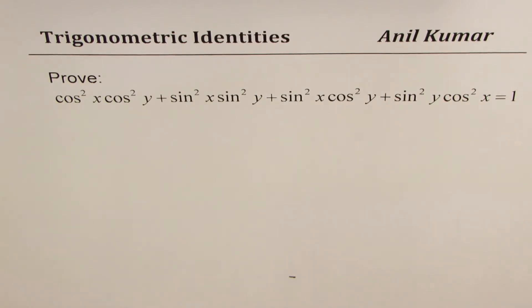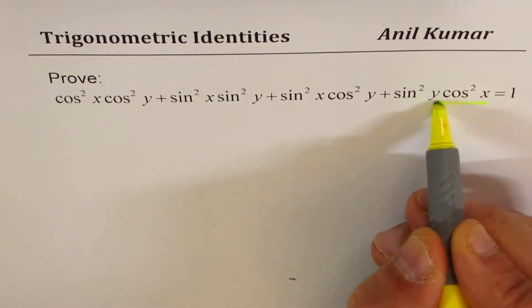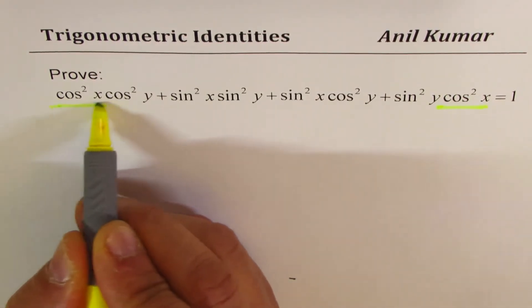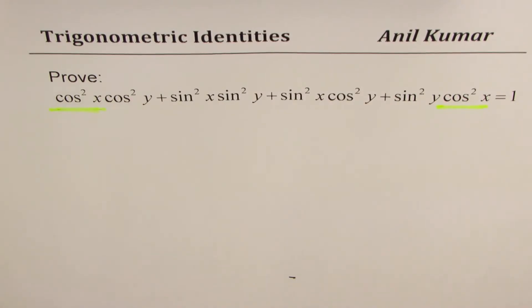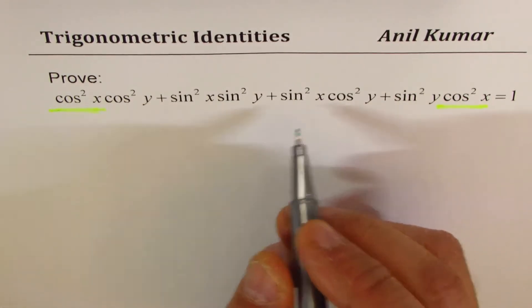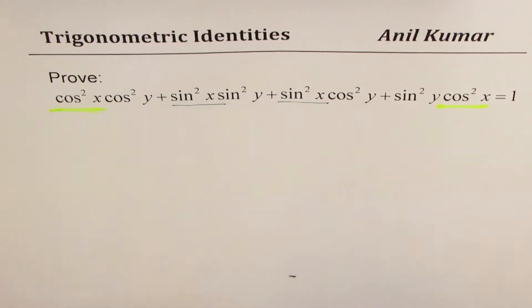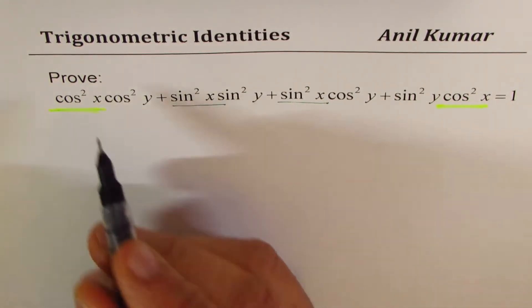In this particular case, let us rearrange and take common factors. We have cos²x and cos²x, so we can take them as a common factor. And we have sin²x and sin²x. So we'll rearrange them first.